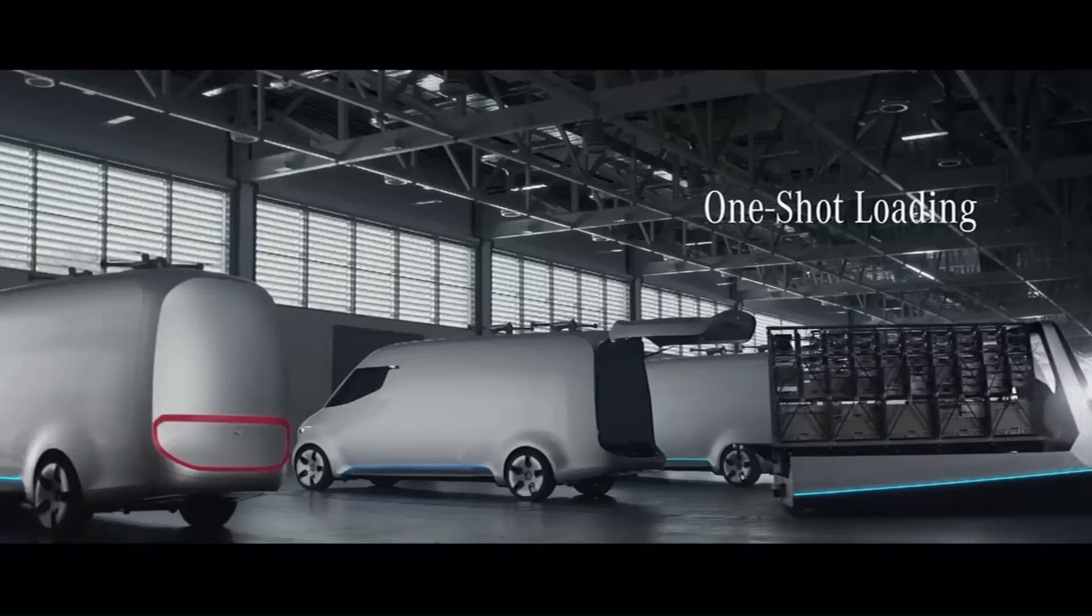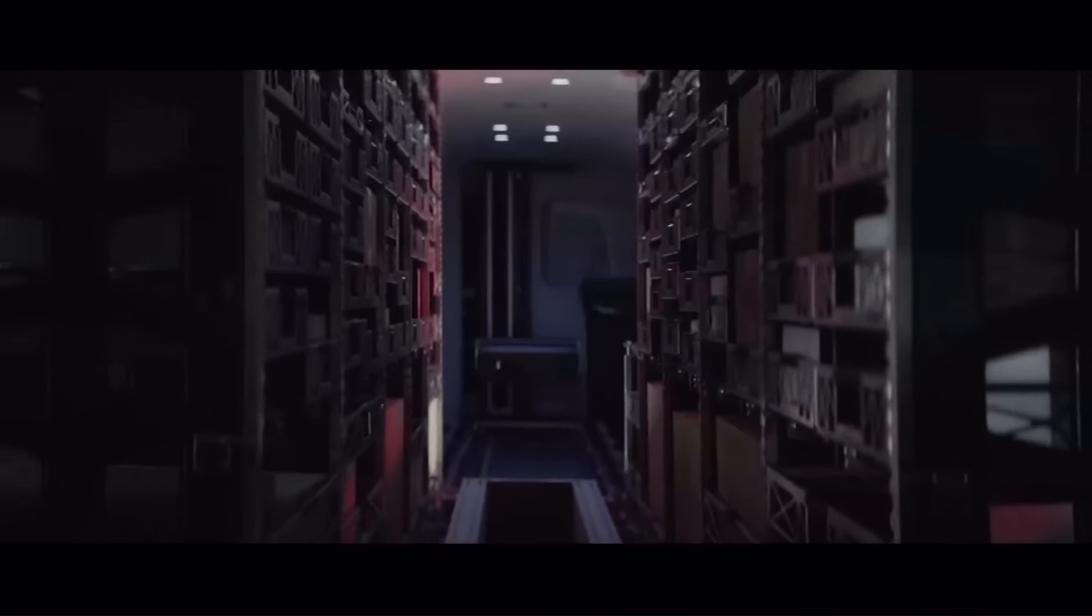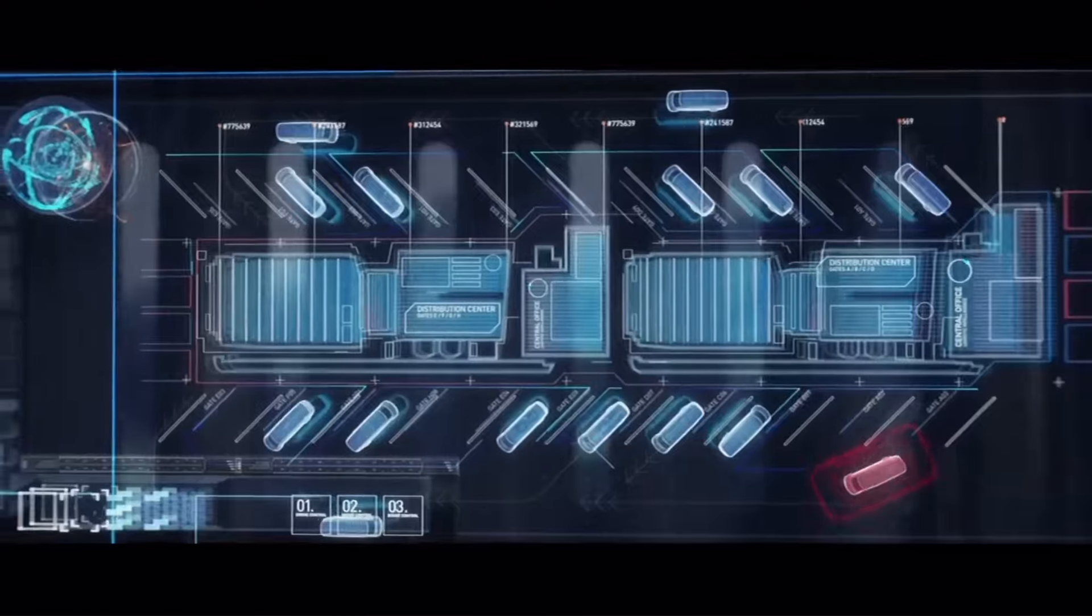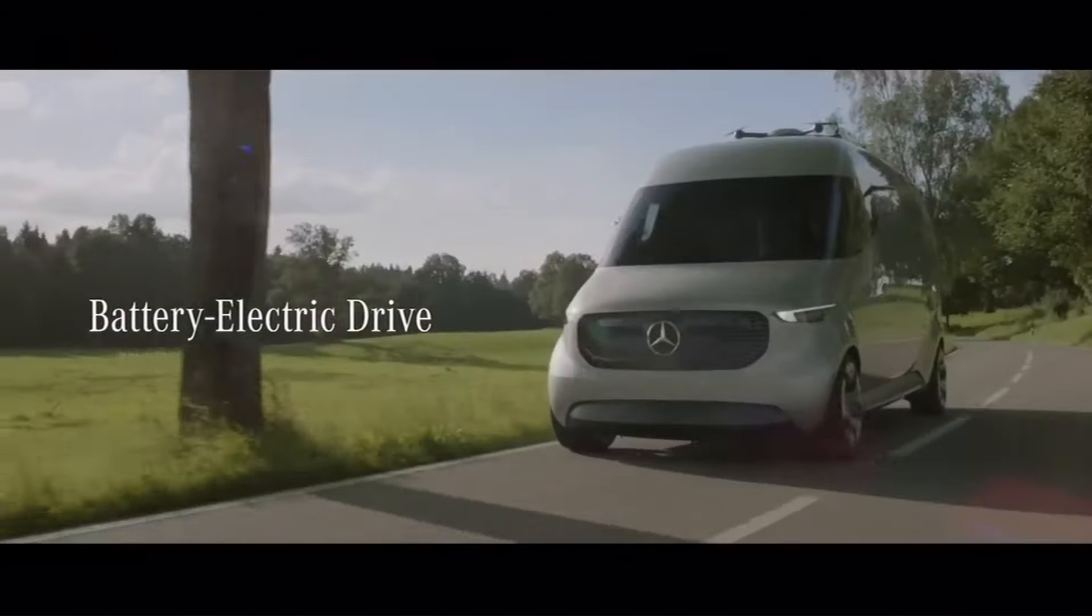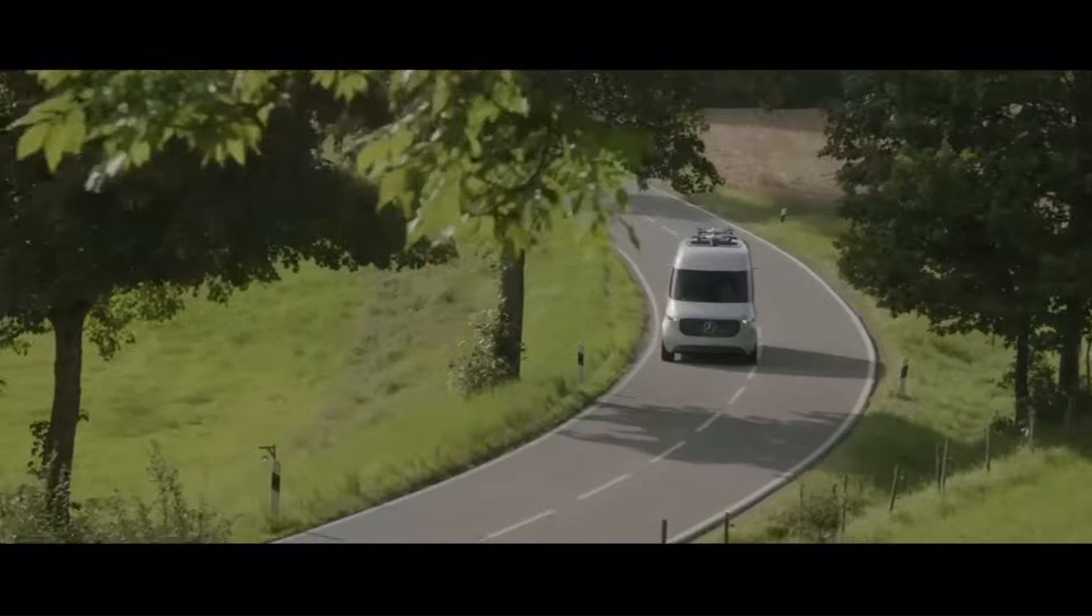Electric drivetrain. The Vision Van is powered by a 75-kilowatts electric motor with a range of up to 270 kilometers. This makes it emissions-free in operation, which is ideal for inner-city areas with strict air quality regulations.